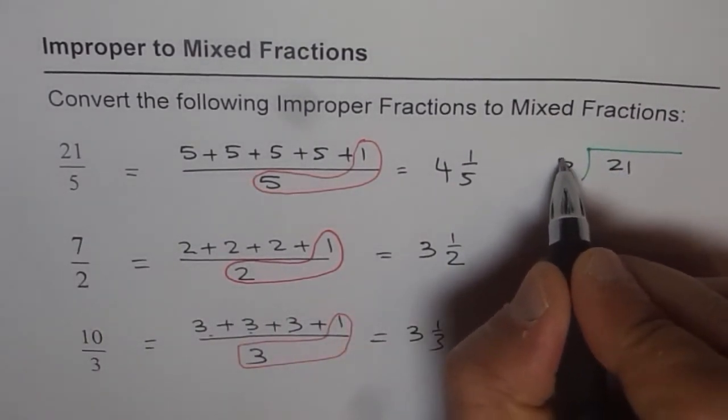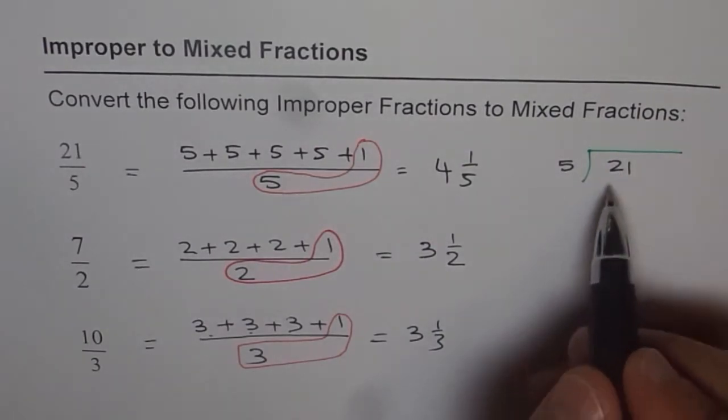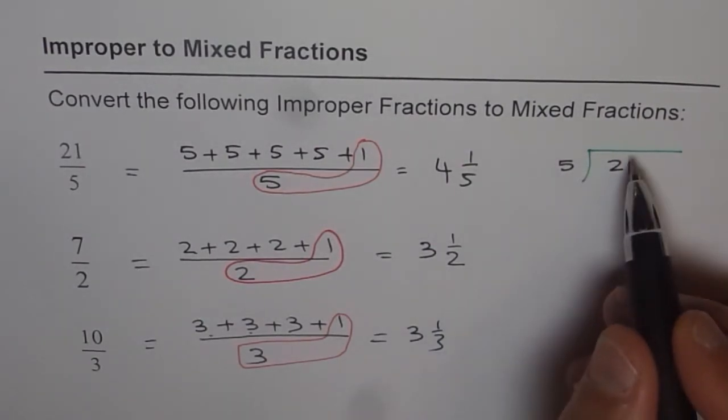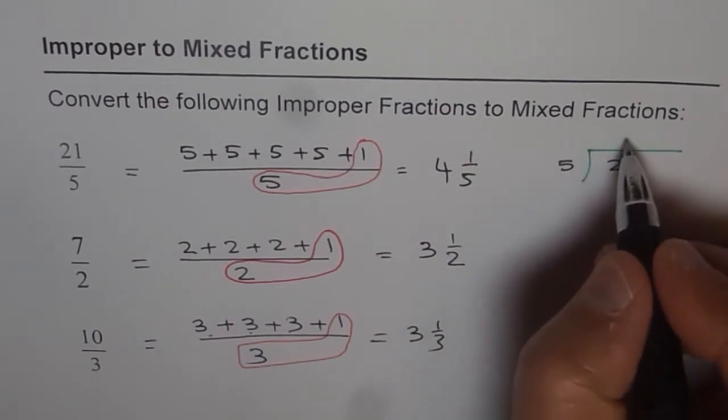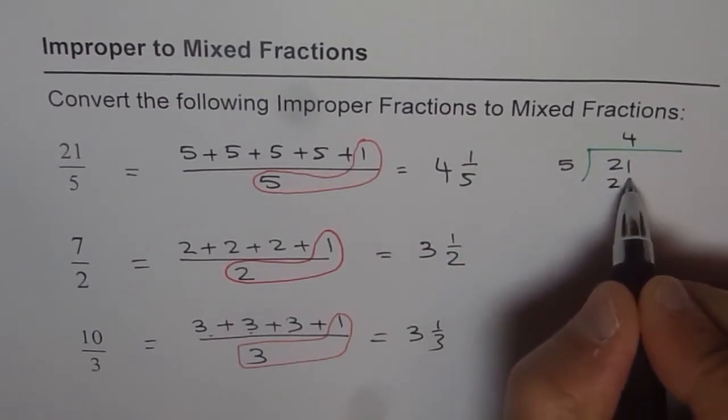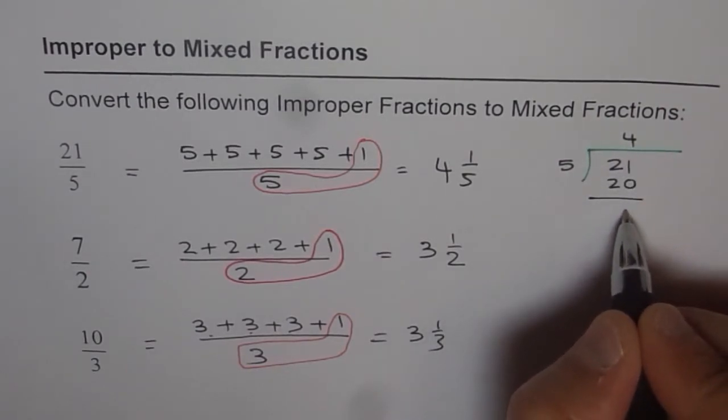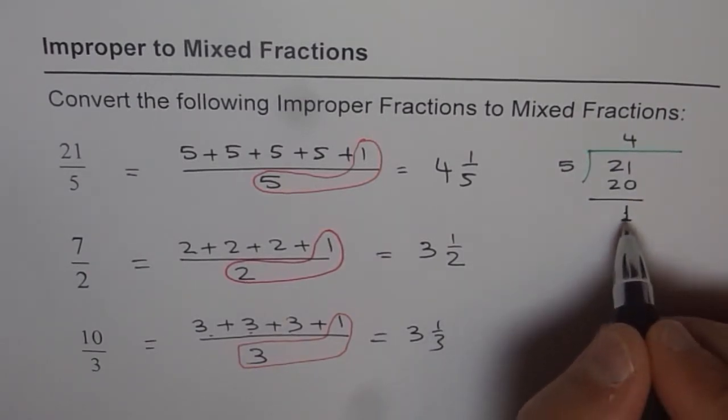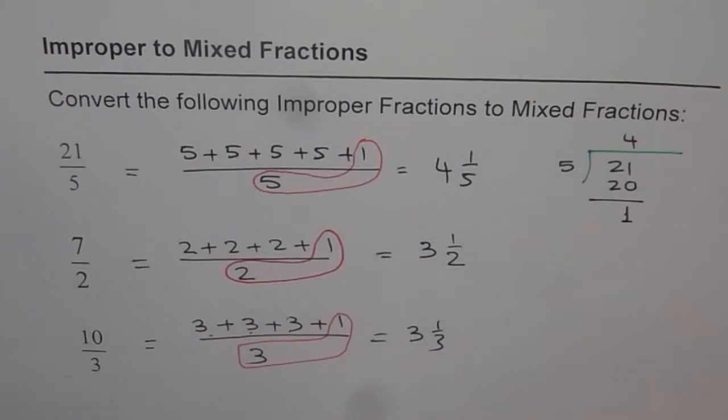5 remains outside. 5 goes how many times in 21? 5 times 1 is 5, times 2 is 10, times 3 is 15, and times 4 is 20. So when you take away 20 from 21, you get remainder 1.